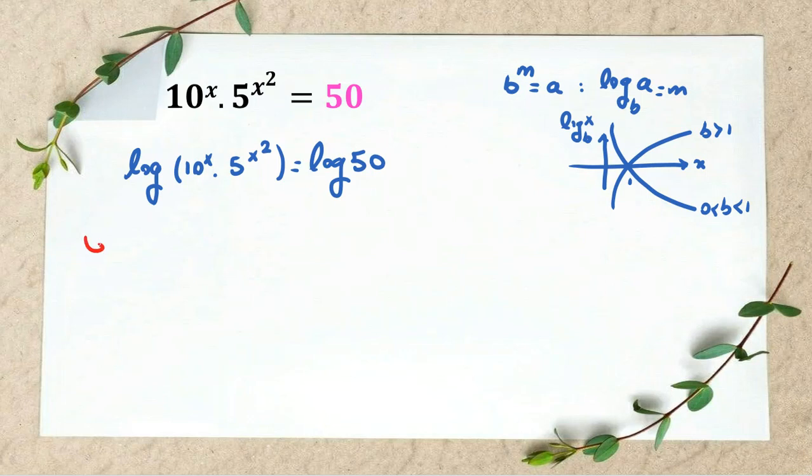Now, one important rule in logarithm is that if we have log ac, it equals log a plus log c. Another thing is, if we have log a to the m, it equals m log a.